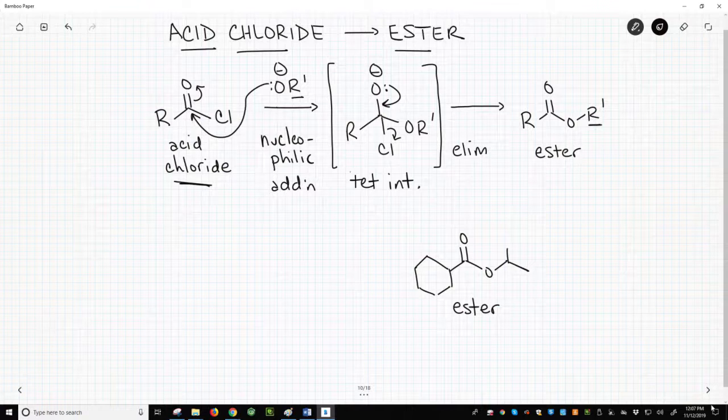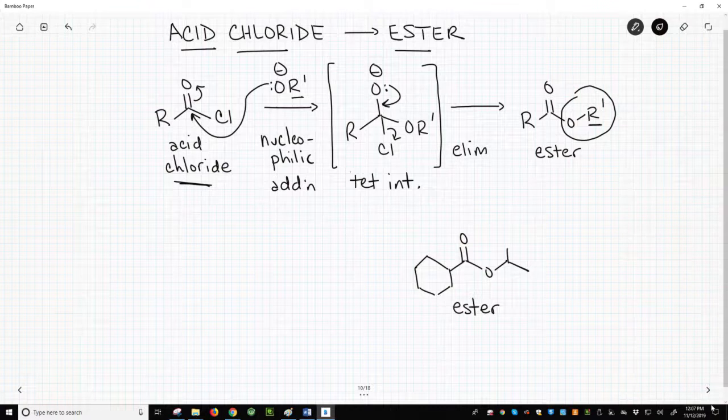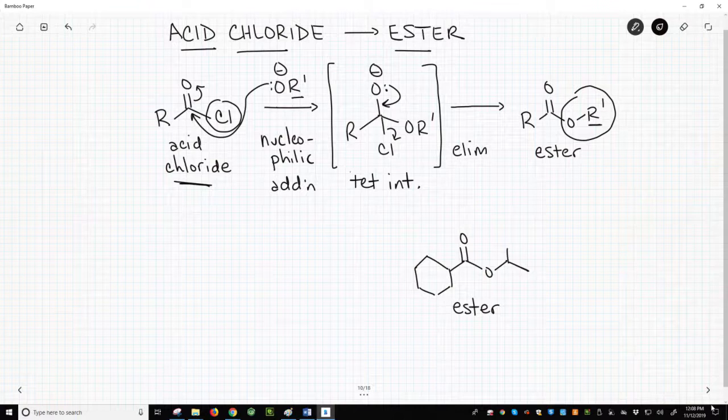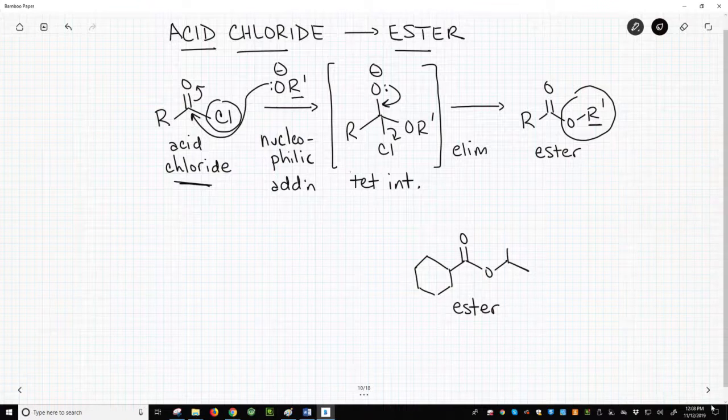This reaction performed a substitution. We substituted the OR' group in place of the Cl of the acid chloride. When people say substitution, it's easy to think SN2. It would be easy to look at this reaction and assume it went through an SN2. We have a leaving group in the starting material, chlorine, and a nucleophile, the alkoxide.